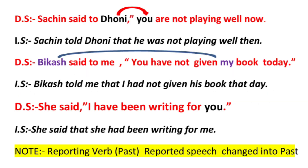Another example: Sachin said to Dhoni, 'You are not playing well now.' Here, 'you' is equal to Dhoni. In indirect speech: 'Sachin told Dhoni that he was not playing well.' 'You' is changed into 'he' because the object pronoun refers to Dhoni. Another example: Vika said to me, 'You have not given my book today.' In indirect speech: 'Vika told me that I had not given his book that day.' 'My book' changes to 'his book', 'today' changes to 'that day', and 'you' changes to 'I' according to 'me'.